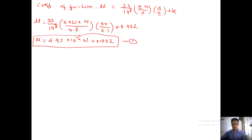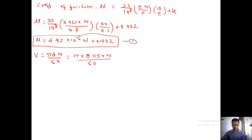Now velocity: V equals pi d N divided by 60. Putting values — d is 0.05 m (converting 50 mm), N by 60 — velocity equals 2.61 into 10 raised to minus 3 into N meter per second. Note that N here represents rpm, not newton.